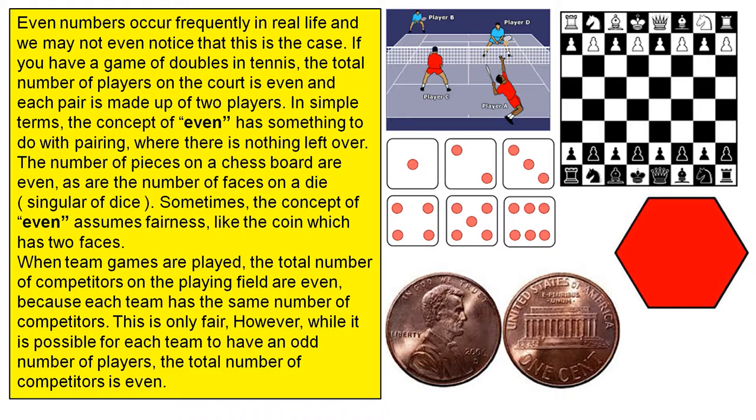Even numbers occur frequently in real life and we may not even notice that this is the case. If you have a game of doubles in tennis, the total number of players on the court is even and each pair is made up of two players.